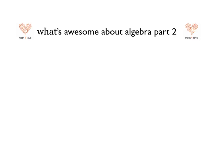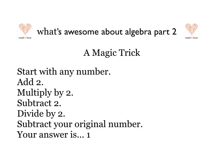Dan here from Math for Love with part two of the What's Awesome About Algebra video. If you remember from part one, we started with this magic trick where we took any number, added two, multiplied times two, subtracted two, divided by two, and subtracted the original number. It turned out the answer was always one, at least for all the examples we tried.